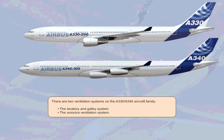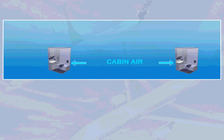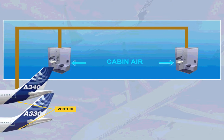There are two ventilation systems on the A330/A340 aircraft family: the lavatory and galley system, and the avionics ventilation system. The lavatory and galley system is completely automatic. Cabin air passes through the lavatory and galley areas and is removed overboard through a venturi. Air extraction is performed by differential pressure or by an extraction fan.